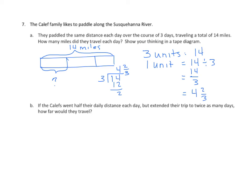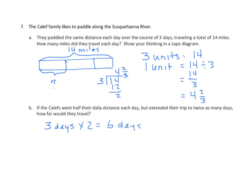Part B changes things a little bit. If the Califfs went half their daily distance each day but extended their trip to twice as many days, how far would they travel? Let's consider that we have twice as many days. They traveled 3 days originally, and we're going to multiply that by 2 because we're doubling it. Now we're going to travel 6 days. It also tells us that they travel half as far each day. We need to take that 4 and 2 thirds and split it into 2 parts. We get 2 and 1 third.